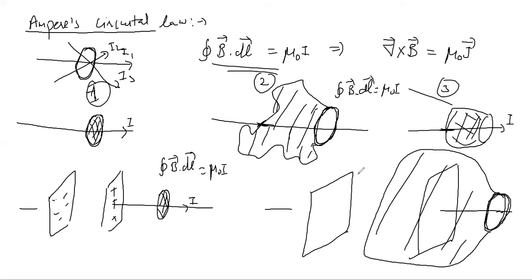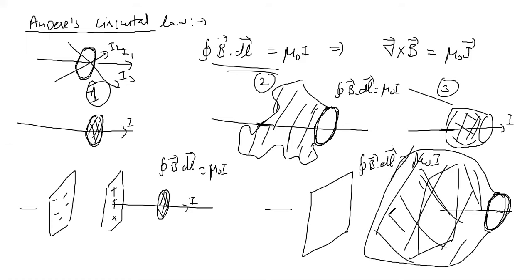The problem arises because the boundary of both surfaces is the same Amperian loop, yet for the second surface you cannot say that B dot dl equals mu naught i, since there is no current piercing through that dashed surface. This is where Ampere's Circuital Law breaks down.